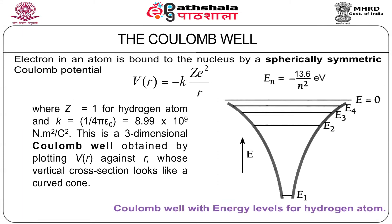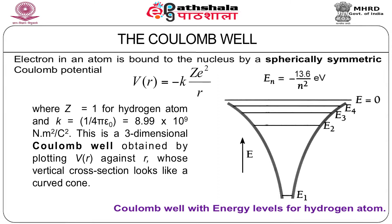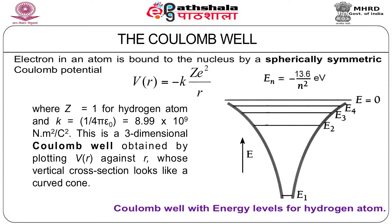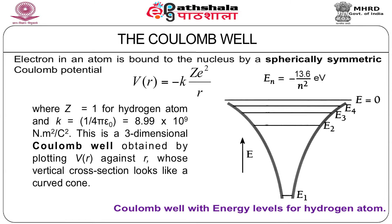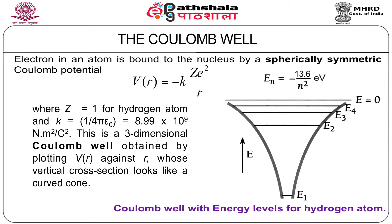You can see the figure — there's a Coulomb well with energy levels for hydrogen atom. If you plot V(r) against r, you will get a sort of three-dimensional conical structure, and this is just the vertical cross section of that cone. The energy levels shown are those obtained from the Bohr model, and as I mentioned, by solving the Schrödinger equation we are going to get the same energy levels as we got in the case of the Bohr model.